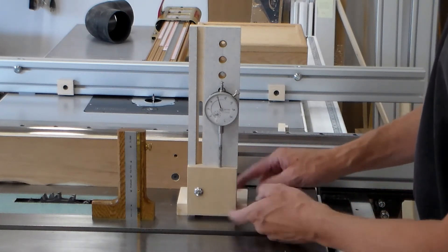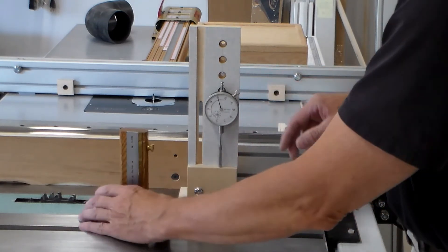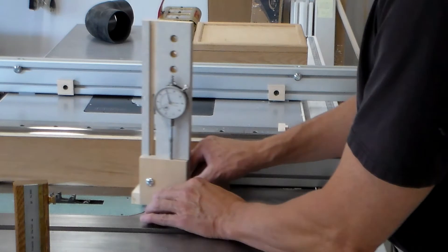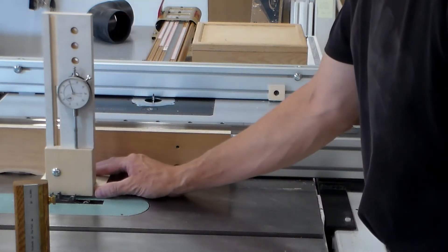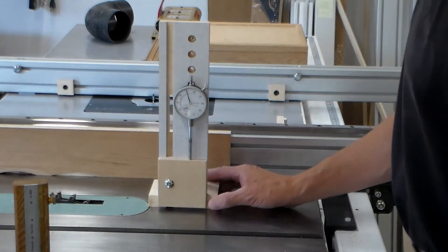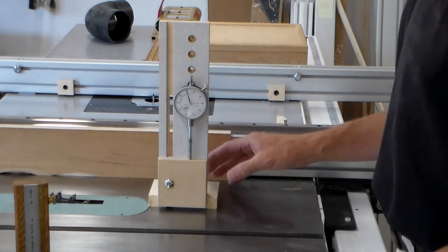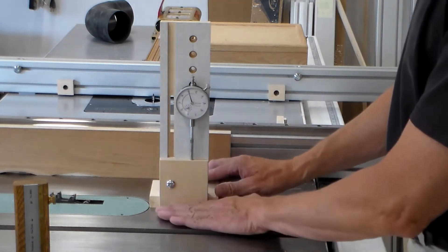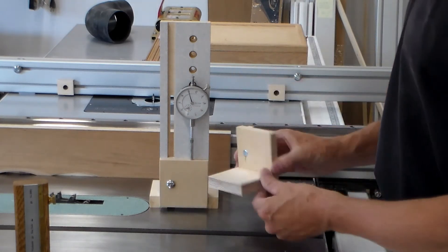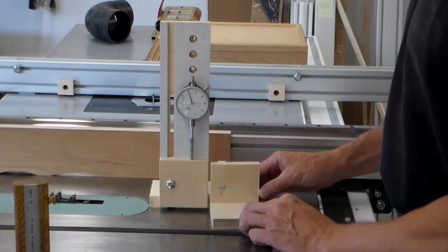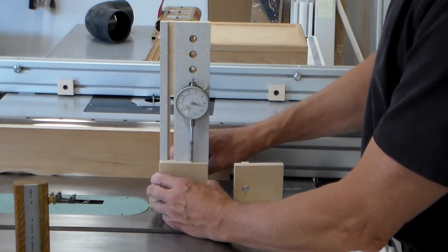I mean it's gonna work fine on the table saw. I can set my height with this no problem. But what if I had a router bit that I couldn't reach or for some reason couldn't get to it? So I took another piece of that and created this. This will also go in here and give you that platform to read off of.